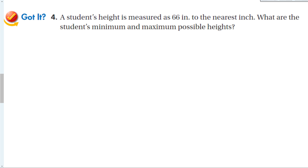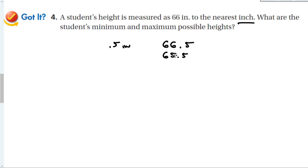A student's height is measured at 66 inches to the nearest inch, which means we could be off by as much as half an inch. So the height could be anywhere from 65.5 to 66.5 inches.